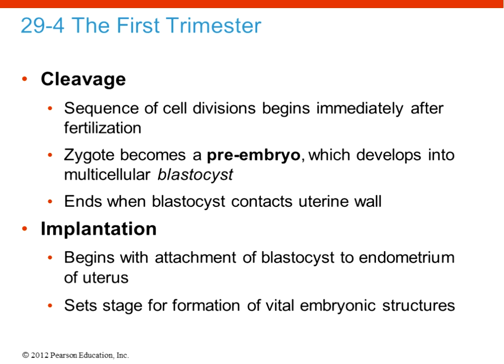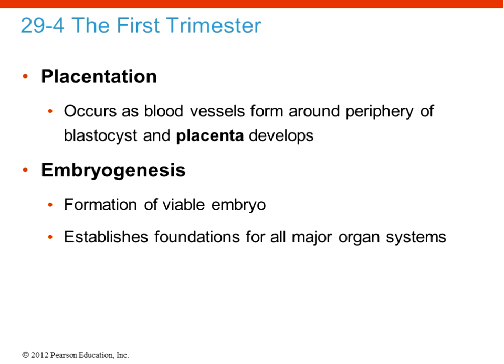Cleavage is the cell division occurring — the zygote becomes a preembryo which develops into what's called the blastocyst, and the blastocyst ultimately will contact the uterine wall where it will be nourished for the rest of the pregnancy. After cleavage, we have implantation: the blastocyst at the end of the cleavage period becomes attached to the endometrium in the uterus. This sets the stage for the formation of essential embryonic structures like the placenta, which is going to be the lifeline to the developing embryo, and also allows for removal of waste products. Implantation in the uterus is obviously an essential component for a successful pregnancy.